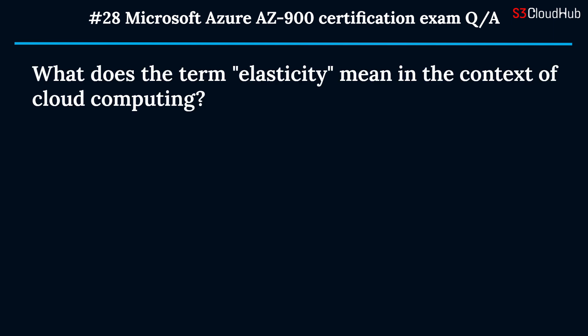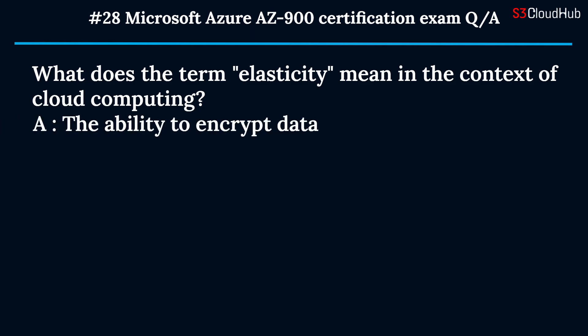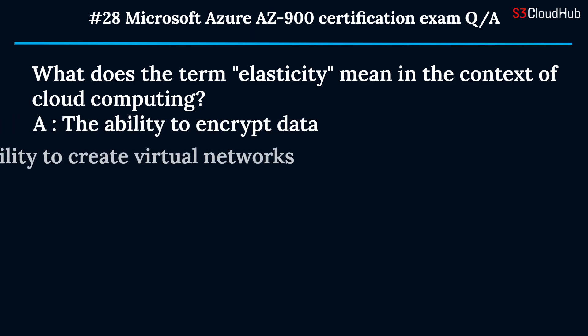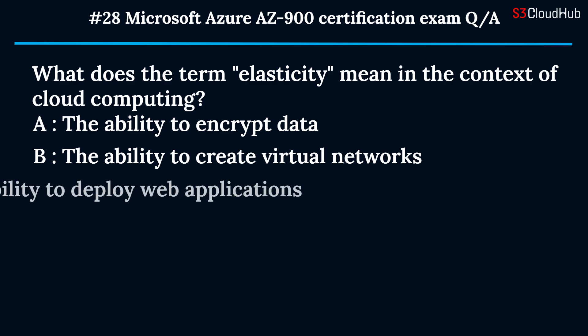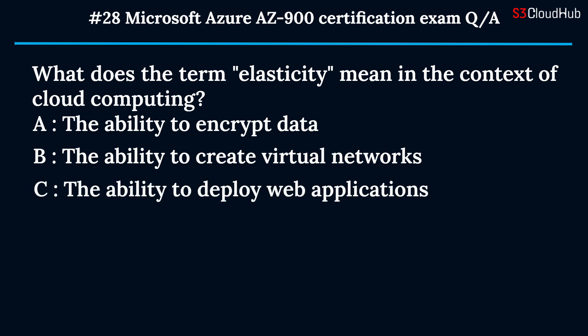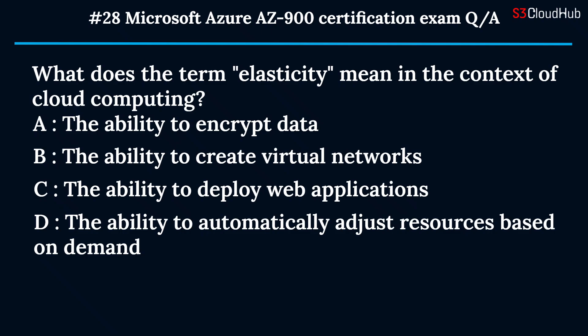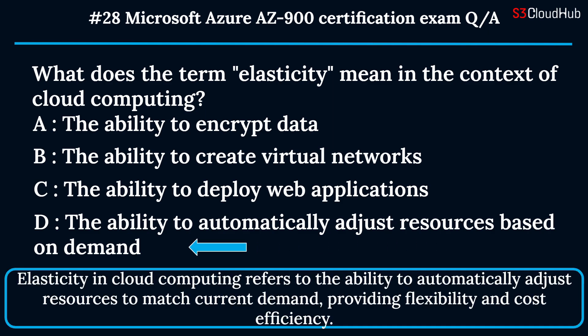The twenty-eighth question: what does the term elasticity mean in the context of cloud computing? Option A: the ability to encrypt data. Option B: the ability to create virtual networks. Option C: the ability to deploy web applications. Option D: the ability to automatically adjust resources based on demand. The correct answer is option D. Elasticity in cloud computing refers to the ability to automatically adjust resources to match current demand, providing flexibility and cost efficiency.